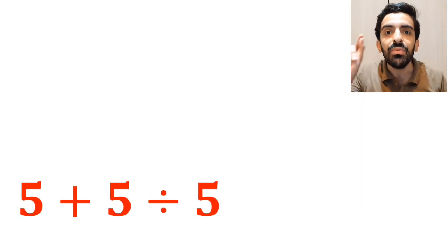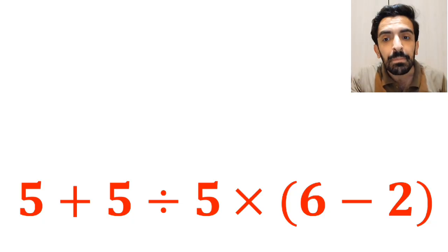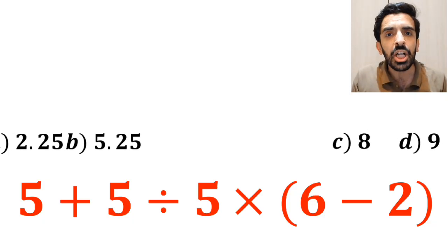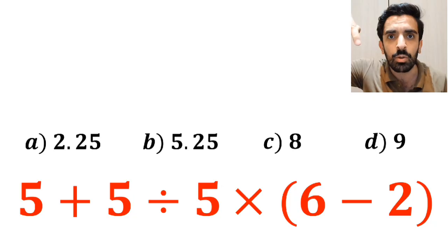What is the value of the expression 5 plus 5 divided by 5 times open parenthesis 6 minus 2 close parenthesis? Which option do you think is the correct answer to this question?